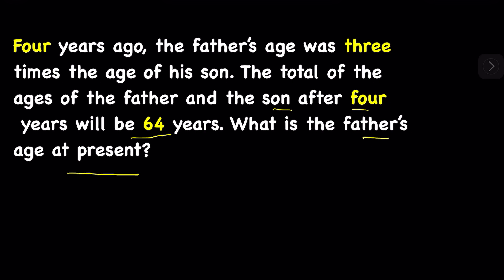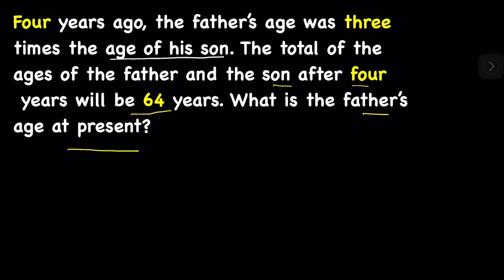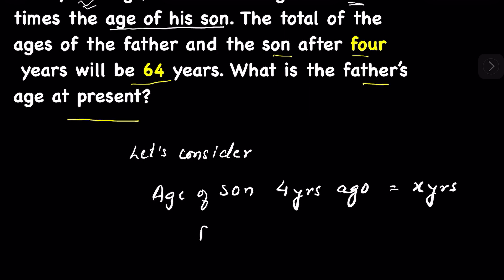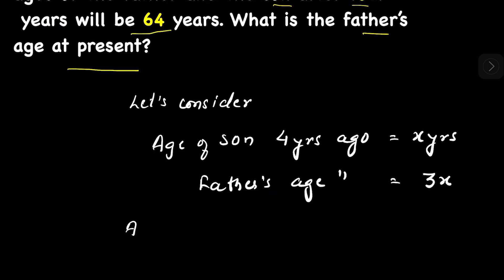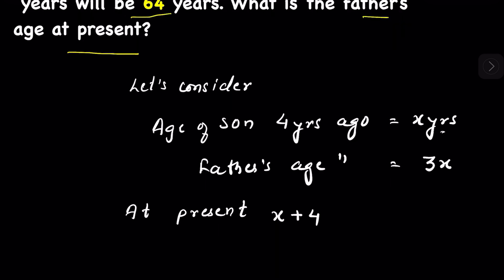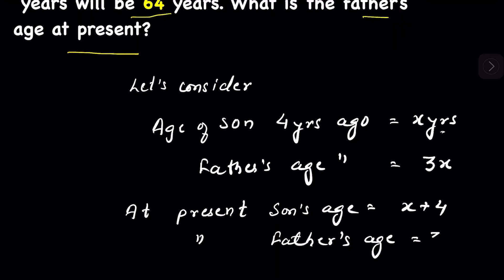If we consider that the age of the son was x years four years ago, then the father's age four years ago will be three times x. At present, the son's age will be x plus four, because x years was four years ago, and the father's age will be three x plus four.